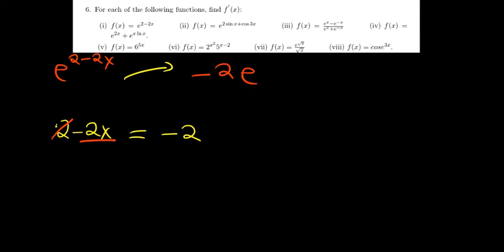Let's work on question 6, which involves exponentials. We want to understand how to differentiate them. The first one is e to the power 2 minus 2x. You differentiate it by multiplying by the derivative of the power. In this case the power is 2 minus 2x, whose derivative is negative 2. So we get negative 2 times e to the power 2 minus 2x.